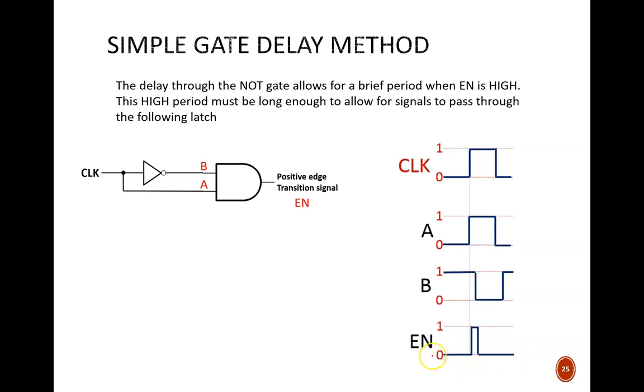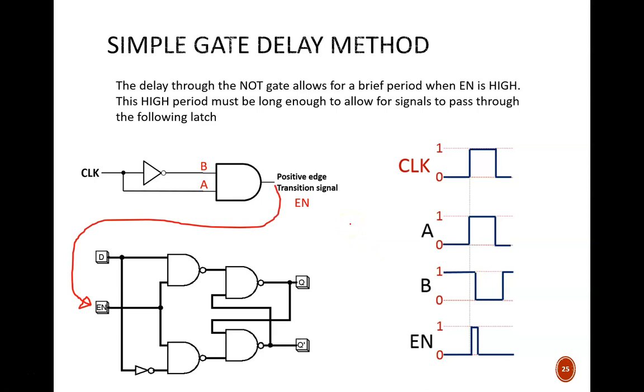I decided to name that signal EN. It should be easy to guess why I did that. I can take that signal and pass it in as the ENABLE input to a gated latch. This schematic is identical to the gated latch we explored a couple lessons ago. But now I'll replace that ENABLE switch with the wire leaving this AND gate. Voila! I now have a D flip-flop.